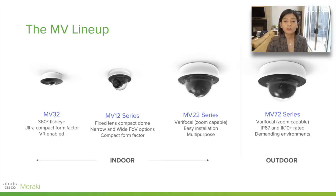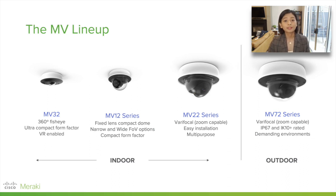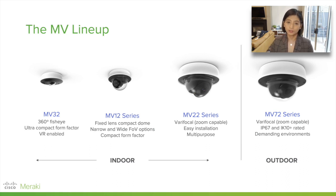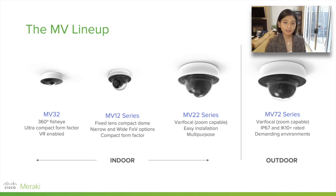These are the current hardware offerings we have. From left to right, we have the indoor MV32, which is our 360-degree fisheye camera — very handy for complete coverage and additional context at your sites. We also have the MV12 series, our fixed-lens compact camera, which is helpful if you know exactly what field of view you want. If you want flexibility to zoom in and out, we have the MV22 series, our indoor vari-focal camera. And finally, we have the MV72 series, which is basically the outdoor version of the MV22, rated IP67 and IK10-plus for demanding outdoor environments.